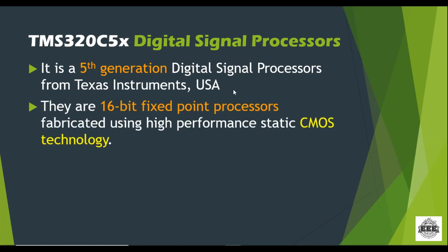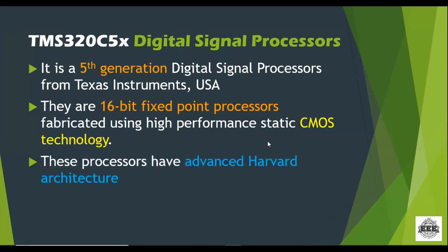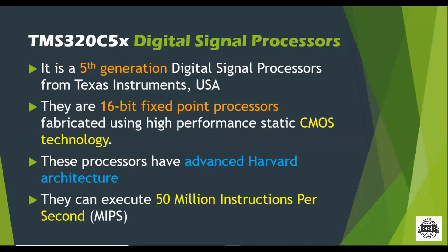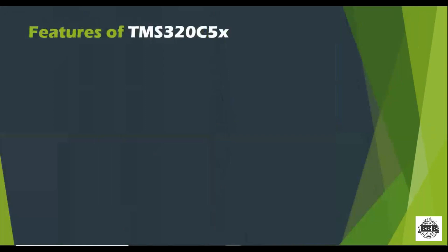The TMS320C5x digital signal processor has been developed by Texas Instruments, USA. This TMS320C5x digital signal processor is a 16-bit fixed point processor. It is fabricated based upon CMOS technologies, and this processor has an advanced hardware architecture. It can execute every instruction within 50 million instructions per second, that is 50 MIPS.